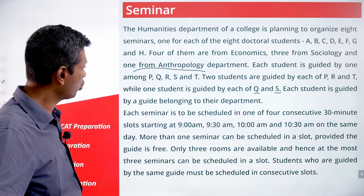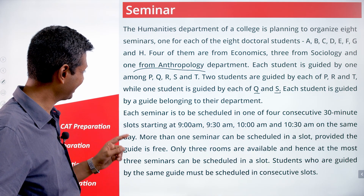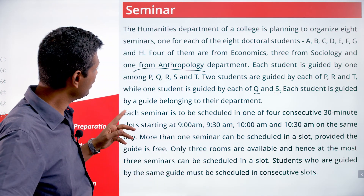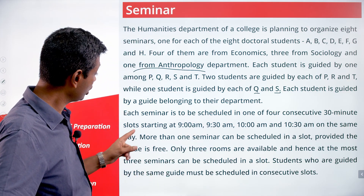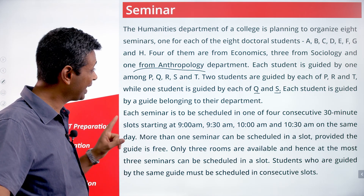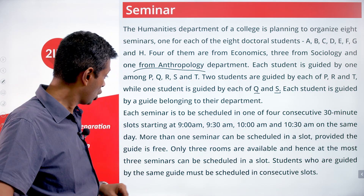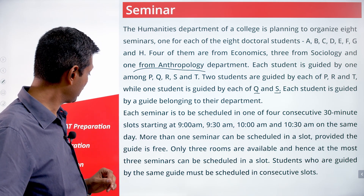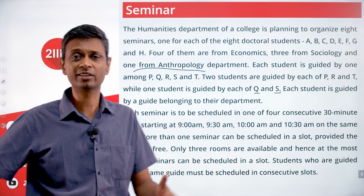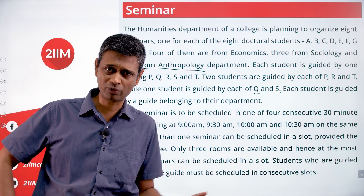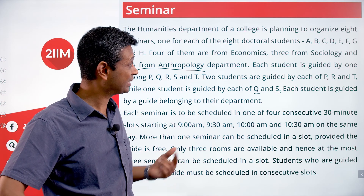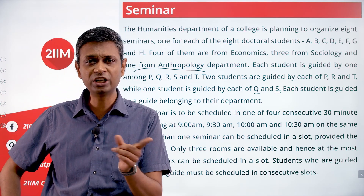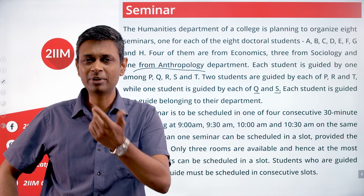Each seminar has to be scheduled in one of four consecutive 30-minute slots starting at 9, 9:30, 10, and 10:30 — four slots for eight students. More than one seminar can be scheduled in a slot, provided the guide is free. Only three rooms are available, so at most three seminars can be scheduled in a slot. Students guided by the same guide must be scheduled in consecutive slots.